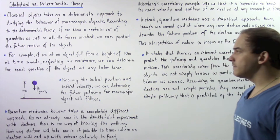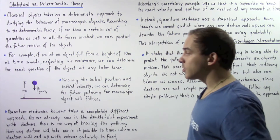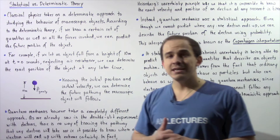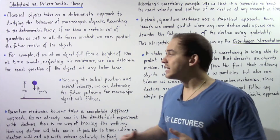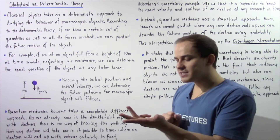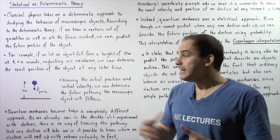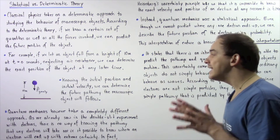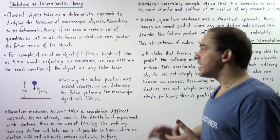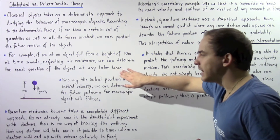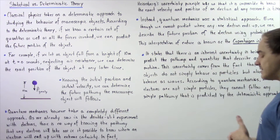For example, in classical physics, if we let an object fall from a height of 10 meters from the surface of the Earth at an initial time of t equals zero seconds and we neglect air resistance, we know the only force acting on that object is the force of gravity. So if we know the forces acting on the object and its initial position and velocity, whether it is macroscopic or microscopic, we can determine the future pathway and the exact position and velocity of the object at any later time. This is the deterministic approach.